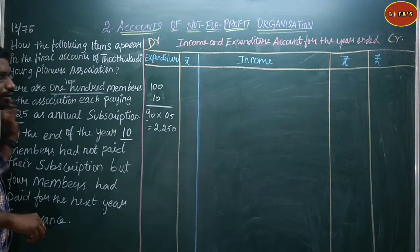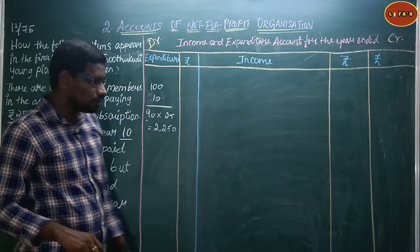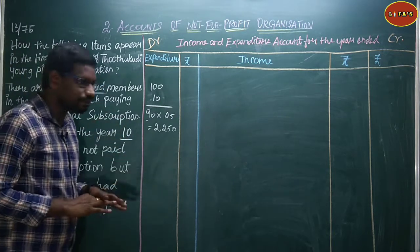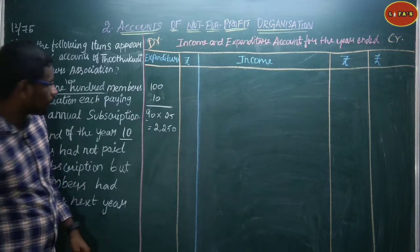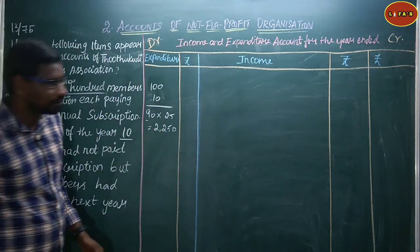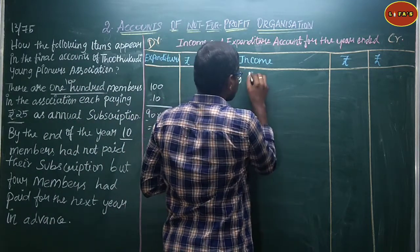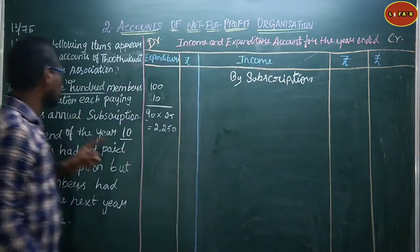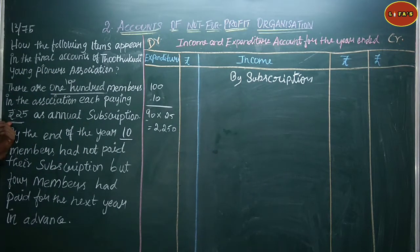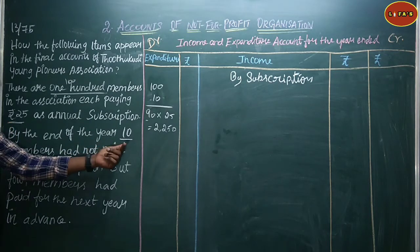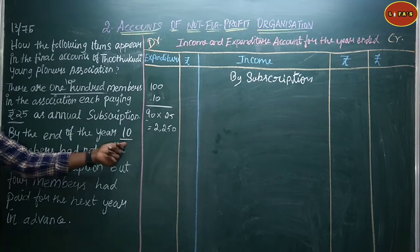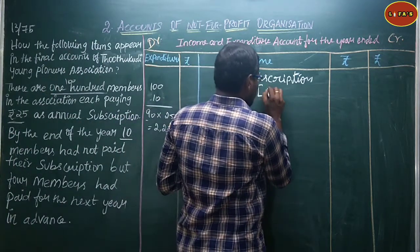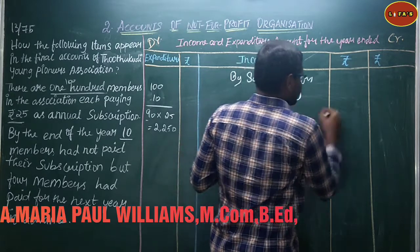Subscription received: as per the format, the next year advance received is also shown in this format. This is a very simple problem. By subscription — 100 members each paying Rs.25, but ten members had not paid, so 90 members paid. 90 into Rs.25 equals Rs.2,250.